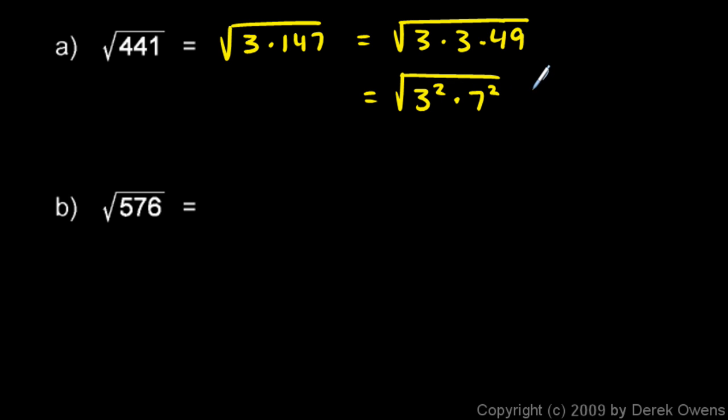So this original problem could be rewritten as the square root of 3 squared times 49, which is 7 squared. And when I square root the 3 squared and square root the 7 squared, I'm just going to end up with 3 times 7, which is 21.